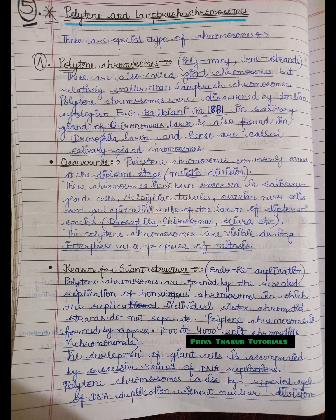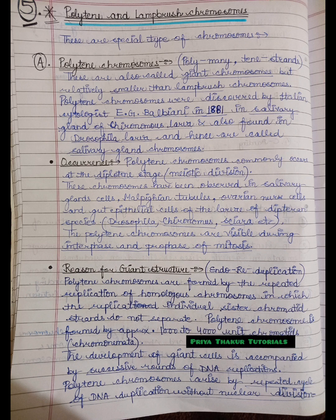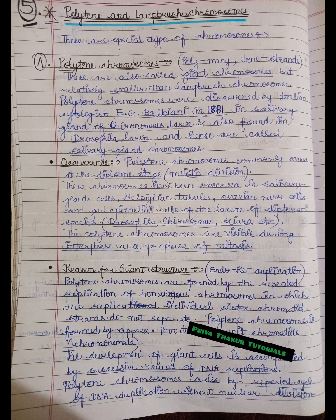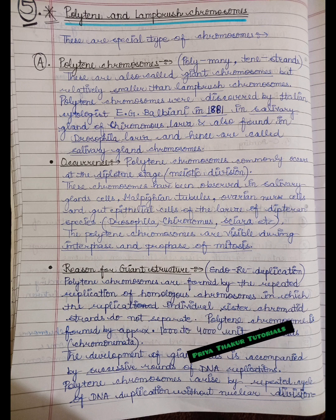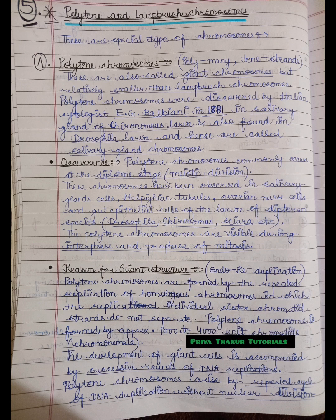Now let us talk about the reason for the giant structure of polytene chromosomes. The reason for their large size is a process called endoreduplication.